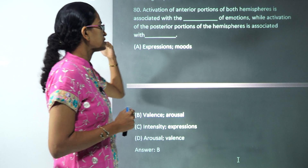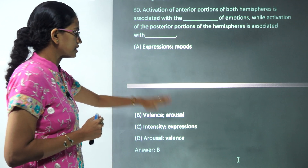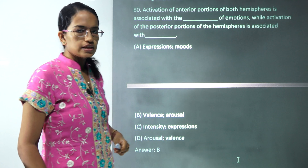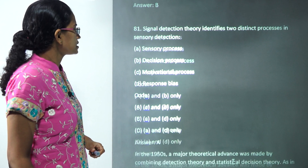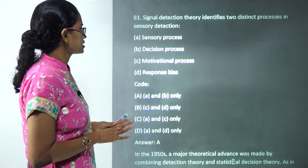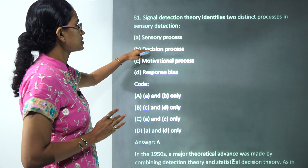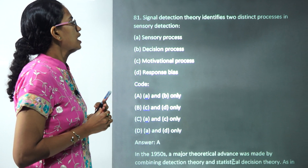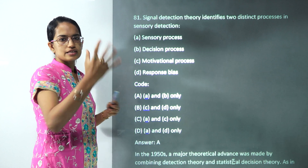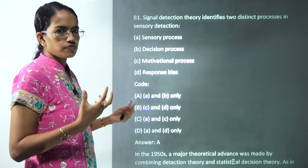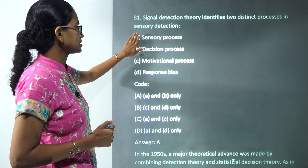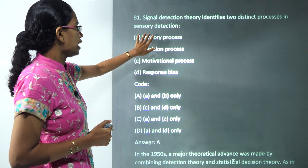The next question states that the anterior portion of the hemisphere is associated with valence, and the posterior portion of the brain is associated with arousal — so valence and arousal are the correct options. The next question covers signal detection method, which includes sensory process and decision process. Hit and false alarm are discussed under signal detection, so A and B are the correct options.